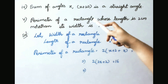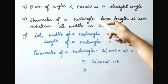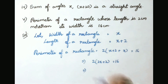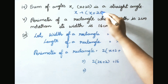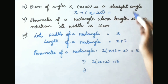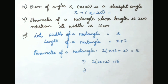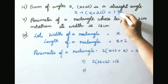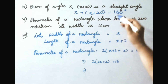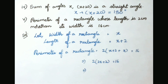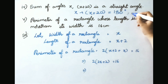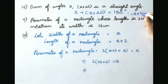Fourth: the sum of angle x and x plus 20 is a straight angle. So x plus (x plus 20) equals 180 degrees. Simplifying, x plus x is 2x, so the simple equation is 2x plus 20 equals to 180 degrees.